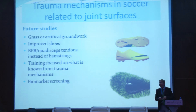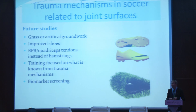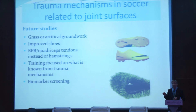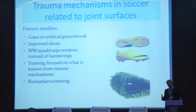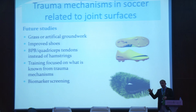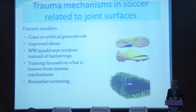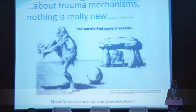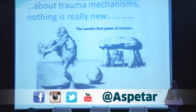Future studies of trauma mechanisms in soccer are important. We should look at the grass and artificial ground surfaces players play on, improve shoe quality, and maybe consider bone-patellar bone or quadriceps tendon instead of hamstrings for female players. Training should focus on what is known from the trauma mechanism — exactly the video-based approach discussed. Also, following players with biomarker screening to see if they are trending toward exceeding the threshold, meaning cartilage is in danger, so the player could be taken off temporarily and monitored extra carefully. About trauma mechanism — nothing is really new.